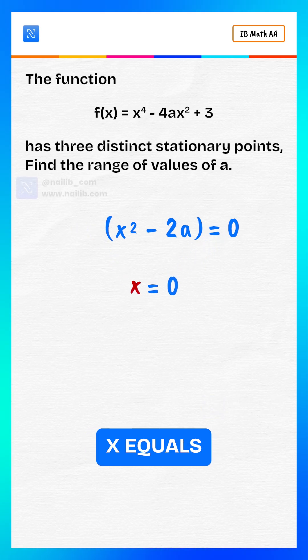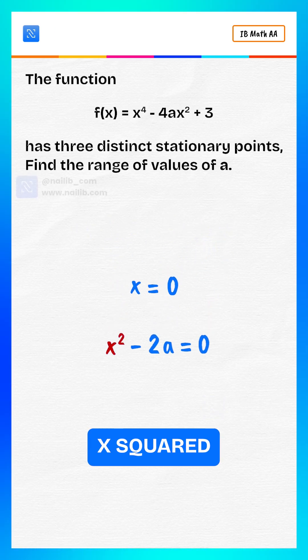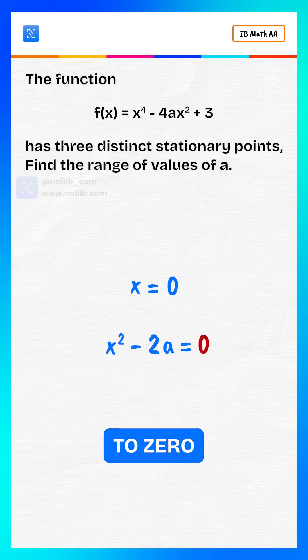Case one, x equals to zero. Case two, x squared minus 2a equals to zero.